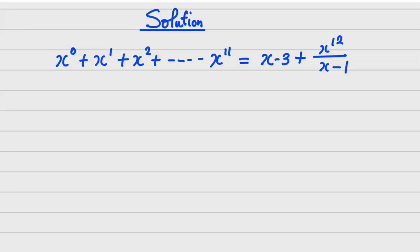So let's do it this way. Now the first thing you will do here is to see that x raised to the power 0 is actually 1. Then we have plus x raised to the power 1 plus x raised to the power 2, then plus dash dash dash of course, then plus x raised to the power 11. Now this is what is on the left hand side.